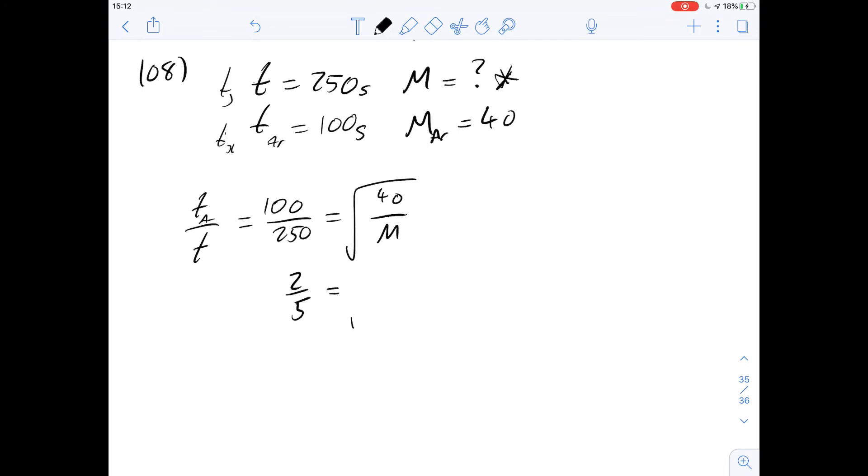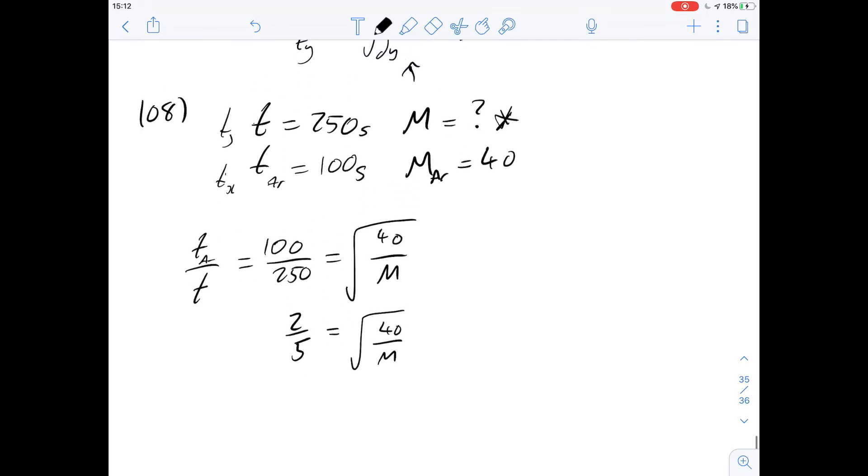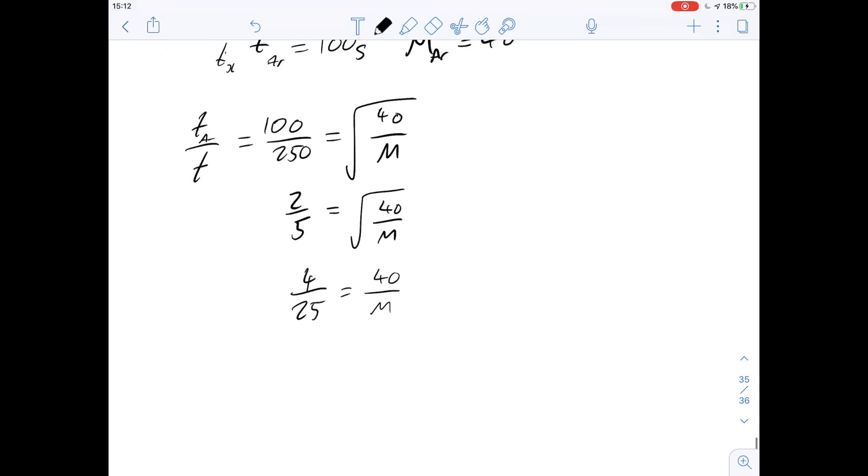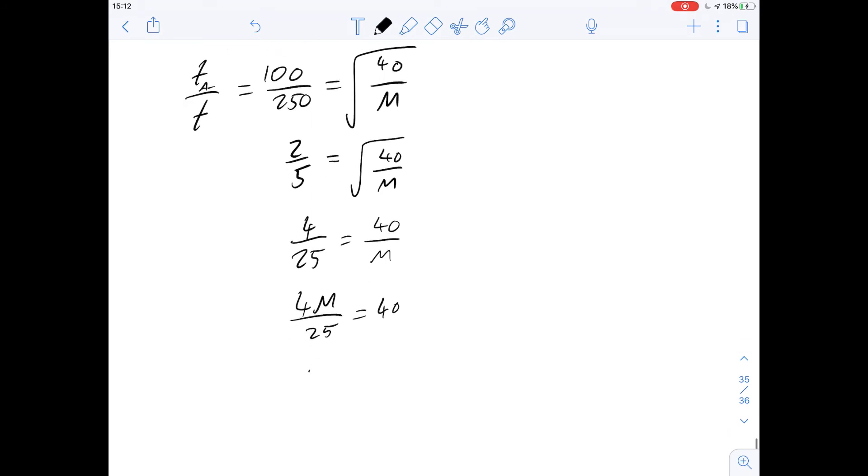Great, so then we can simplify this equation to two-fifths equals root 40 over m and we can square both sides then and we get 4 over 25 equal to 40 over m. So let's multiply both sides by m. We get 4m over 25